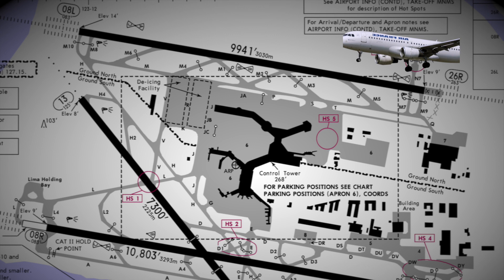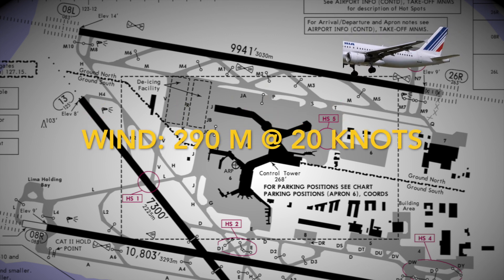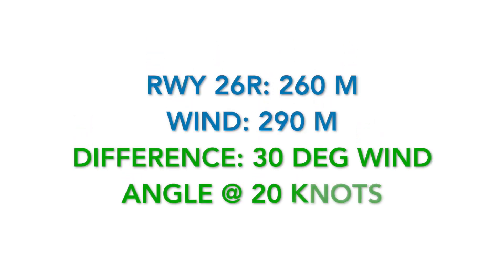Let's take for example we're landing today on runway 26 right in Vancouver and the winds are 290 degrees at 20 knots. If you take runway 26 right and put the zero at the end, that's 260 degrees, and the wind is 290 degrees. So the difference between the two is 30 degrees and the wind is 20 knots.